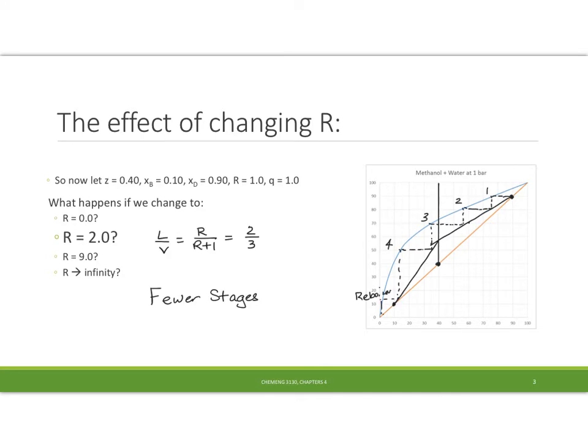When we let R equal 2, L over V is 2 over 3. So the slope this time, doing a rise over run of 2 over 3, we end up with a graph that looks something like this and I had fewer stages — 4 instead of 5.